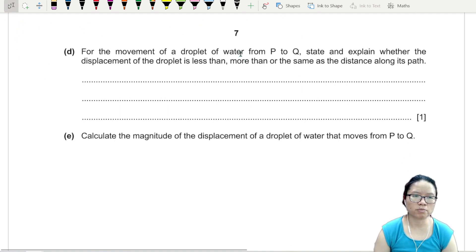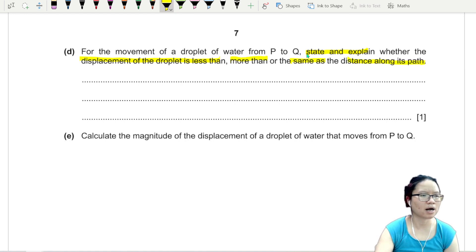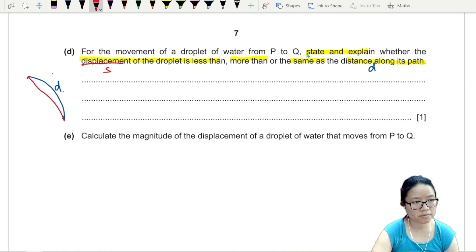For the movement of a droplet of water from P to Q. State and explain whether the displacement of the water droplet is less than, more than or same as the distance along the path. So we have P and Q here. And then we have the parabolic path. This is the distance along the path. Let's say I call this D. And then if I want to look at displacement, S, this is my displacement. Are they the same? No. Is one something longer than the other? Yes. D is longer.